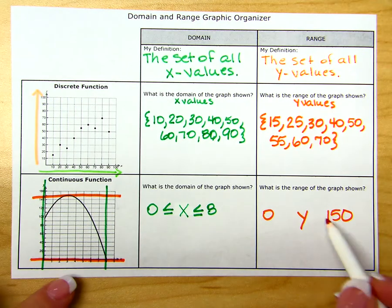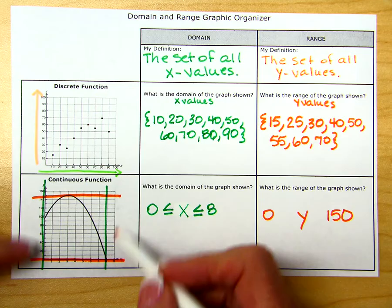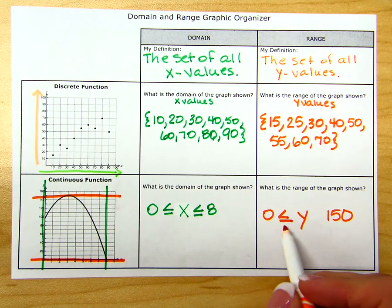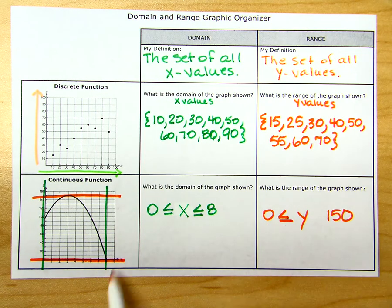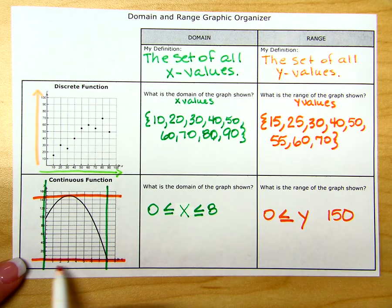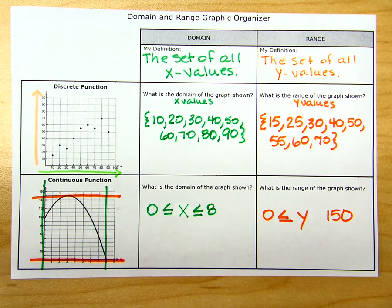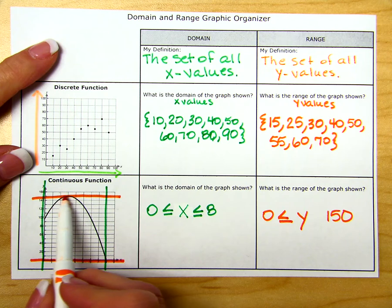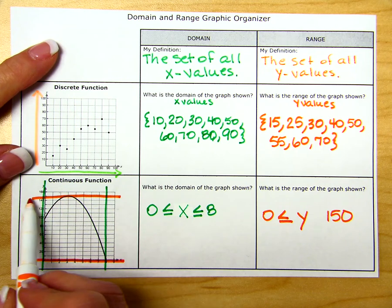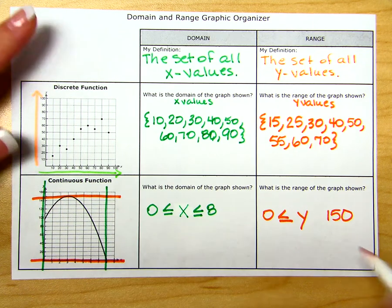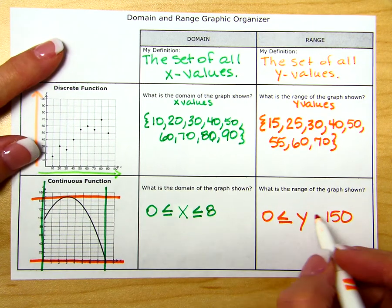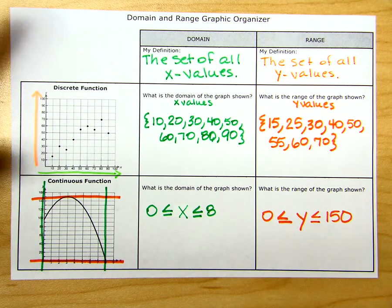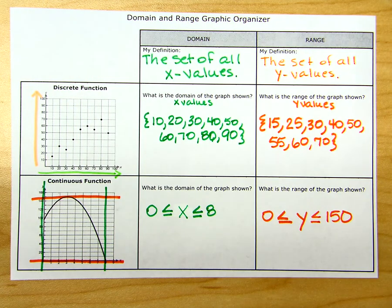Y has to be bigger than 0, so 0 is less than or equal to y because there is a point there — we include the 0. At 150, the graph is solid with no open circles, so we include 150 as well. That means y has to be less than or equal to 150.